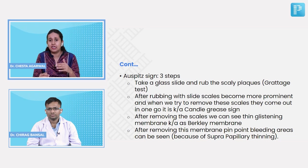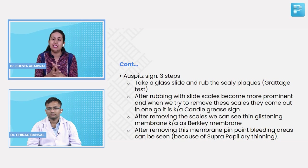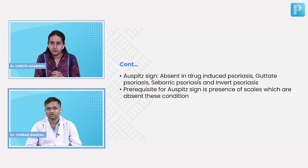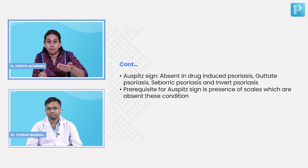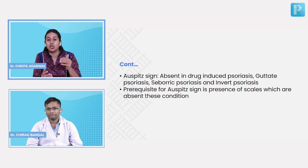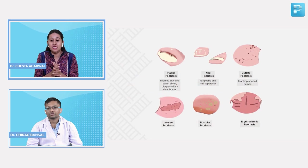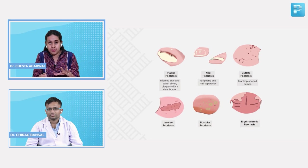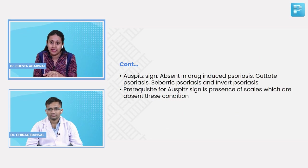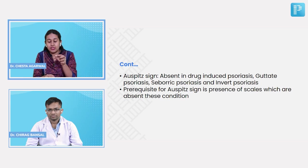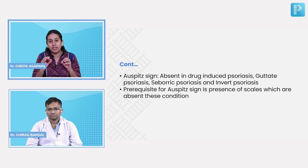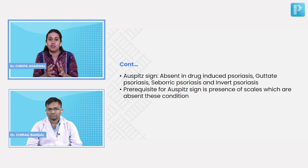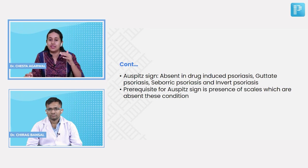Is there any variant of psoriasis where Auspitz sign or grattage sign is negative? It is negative in all variants where there are no scales — such as inverse psoriasis (which occurs in flexures like axilla and groin where moisture prevents scales), erythrodermic or pustular psoriasis, and guttate psoriasis. Wherever there is an absence of scales, the Auspitz sign tends to be negative, as the prerequisite for performing it is the presence of scales.